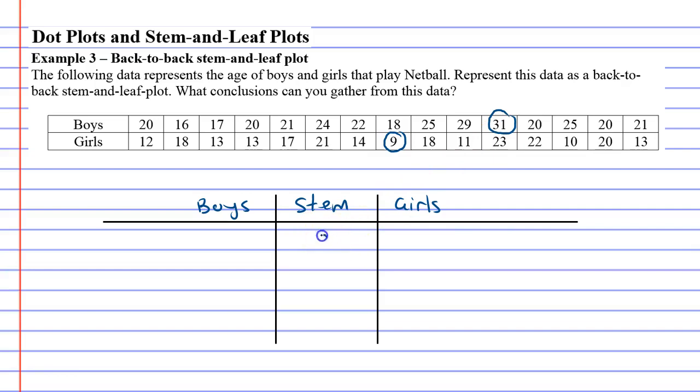So we'll mark them. So basically our stem is going to range from zero all the way to three because we go from nine for the girls. We'll put the nine in all the way up to 31 for the boys. Alright, so we've actually done two of the numbers. We'll cross them off as we go.